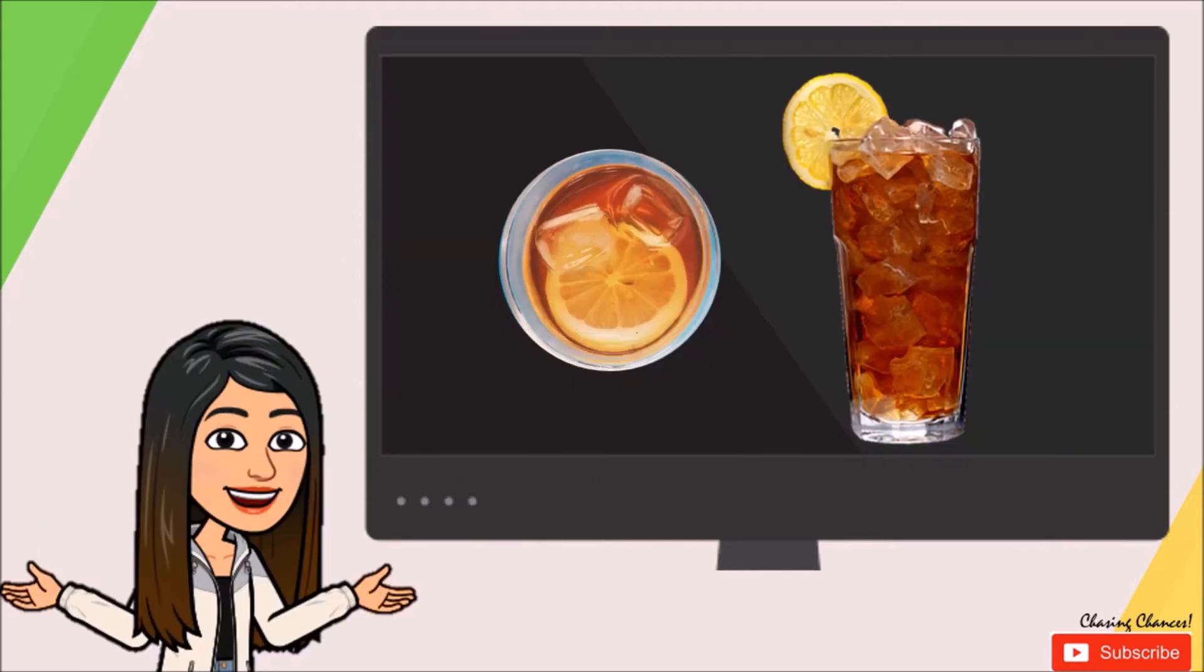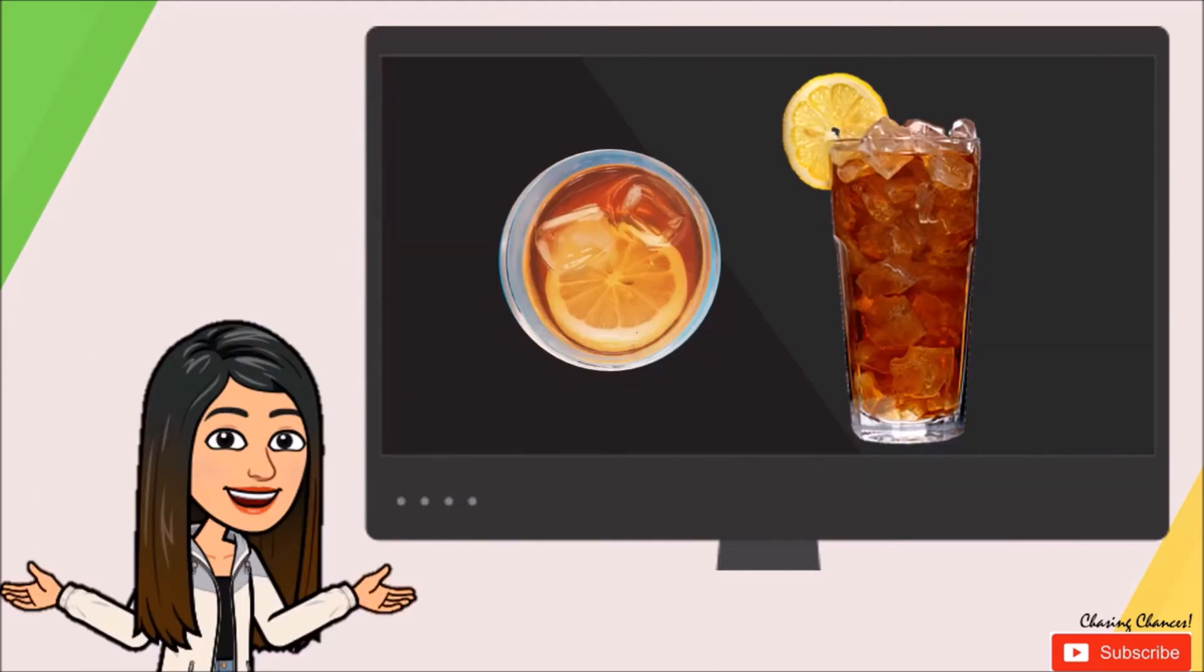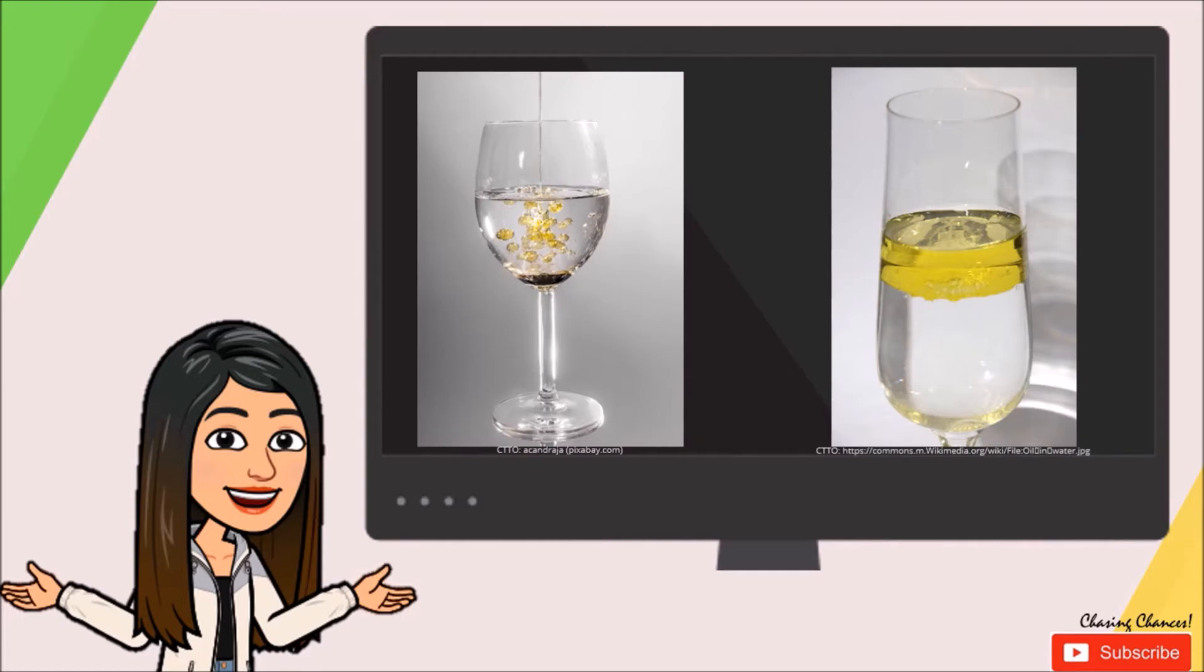This drink is also an example of a heterogeneous mixture as we can still see where the liquid is, the ice cubes and the fruit. This mixture of oil and water is also an example of a heterogeneous mixture as we can recognize that the yellow one on top is the oil and the one below is the water.